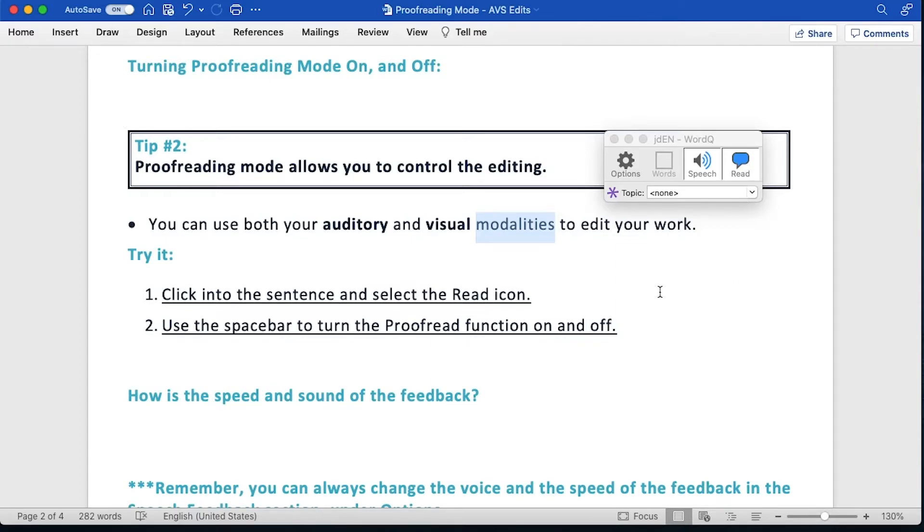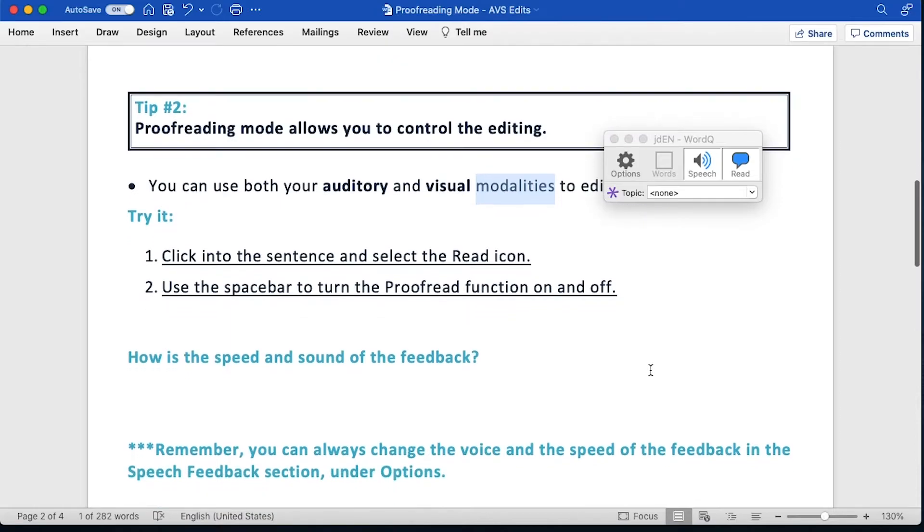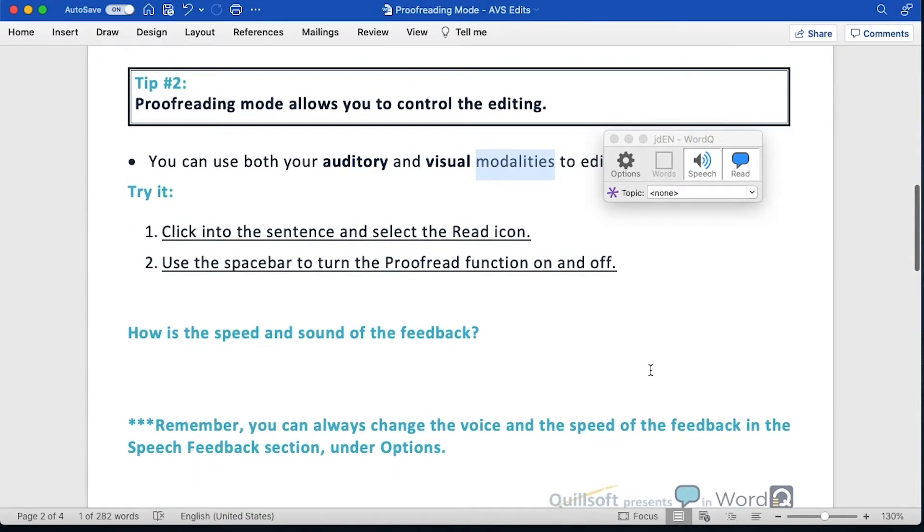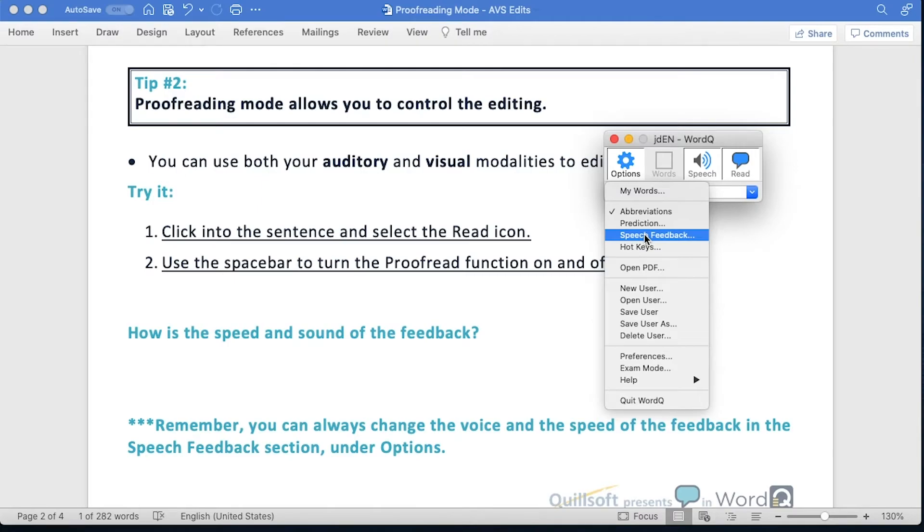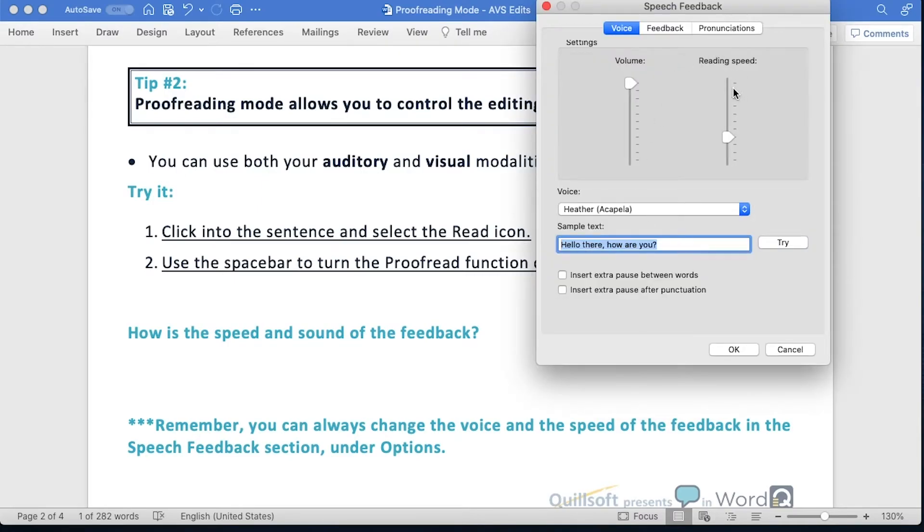How's the speed and sound of the feedback? If you find that it is too fast or you don't like the voice that's coming out, remember you can always change the voice and the speed of the feedback in the speech feedback section under options, right on the right-hand side where the speed is to either increase or decrease the speed and to choose the voice that you want.